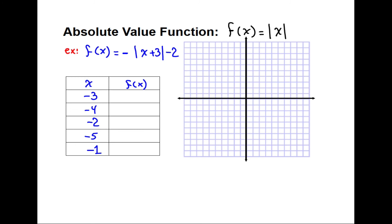In this final absolute value function example, there is a negative in front of the absolute value. Inside we have x plus 3, so we start with negative 3 as the input and pick values to the right and left, just like in the other examples. We plug these values in to get the output values and plot the ordered pairs. Once everything is plotted, we connect the dots and get a V-shape opening downward. I hope this presentation helped you understand graphing elementary functions, and we're going to do some more in class.